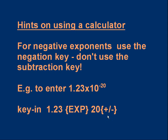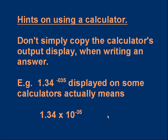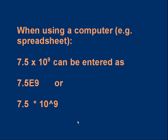A word of warning: don't simply copy your calculator's output when writing the answer. Some calculators display standard form as something like 1.34 superscript minus 35, which looks like '1.34⁻³⁵' on screen. That notation represents 1.34×10⁻³⁵, and you must write it down correctly as a proper standard form number — don't just copy each character from the display.